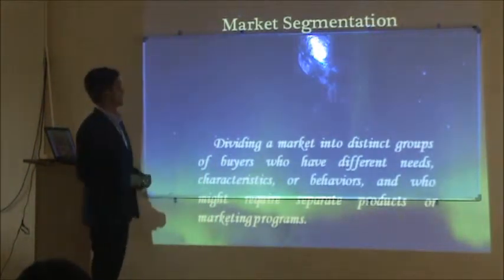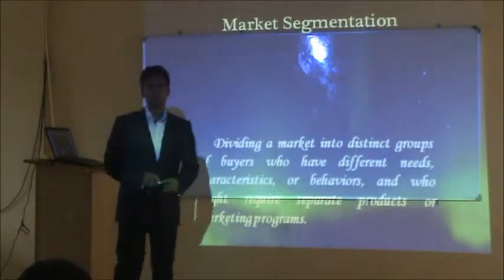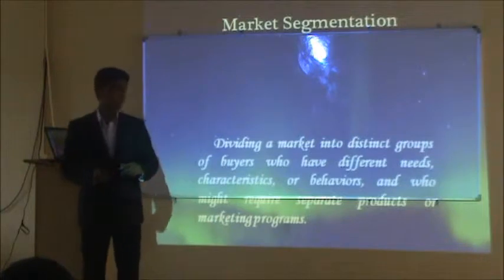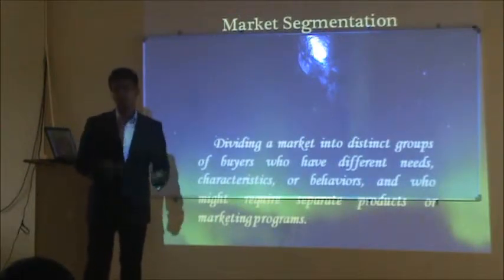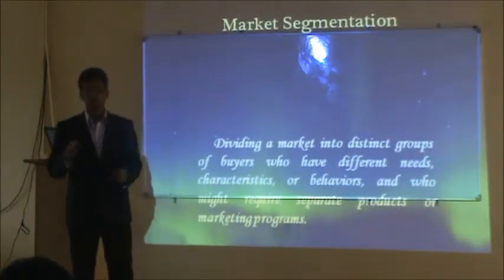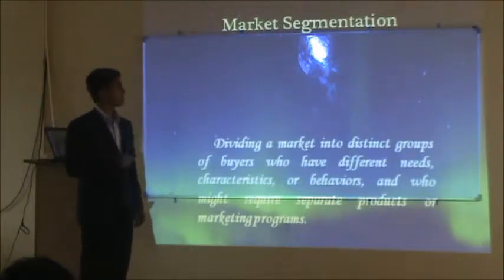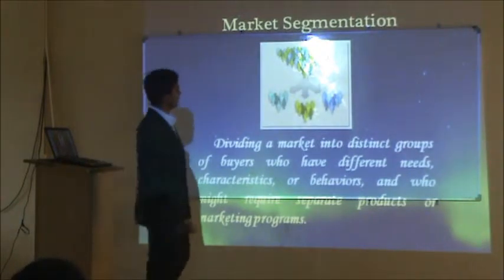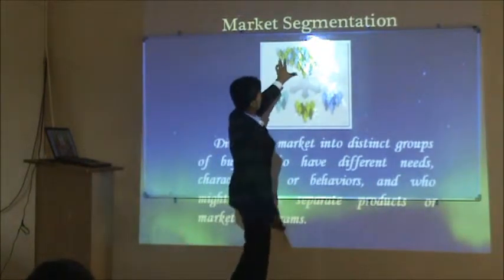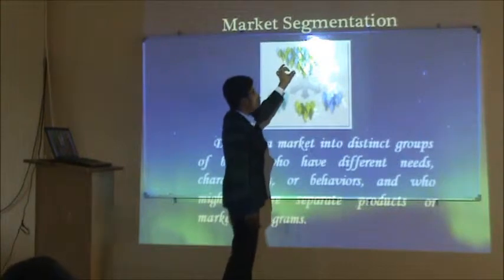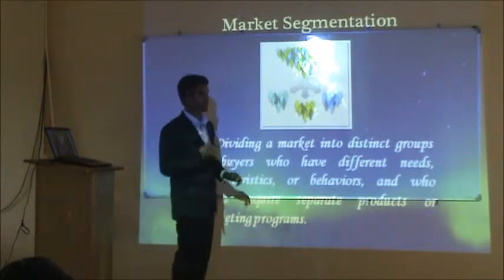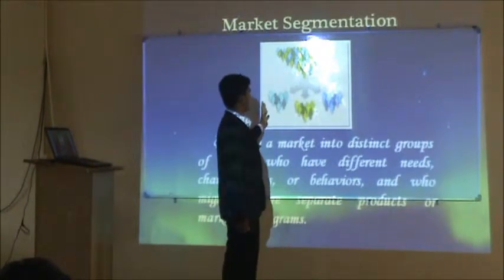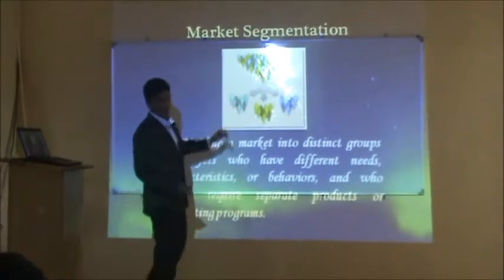In market segmentation, the producers of the products first determine for whom they have to produce a product. For this purpose, they carry out market segmentation. This involves a group of customers — they will know for whom they want to create a product, and divide the customers into different segments.